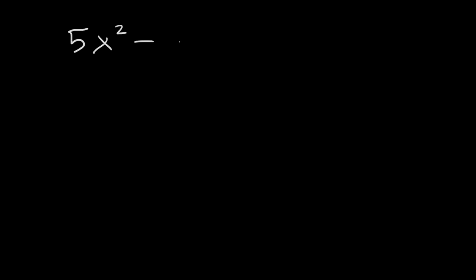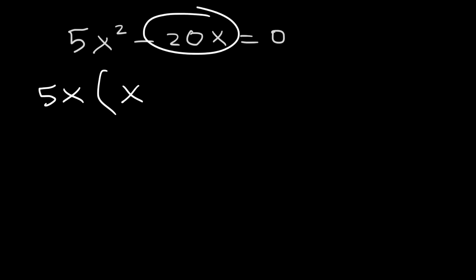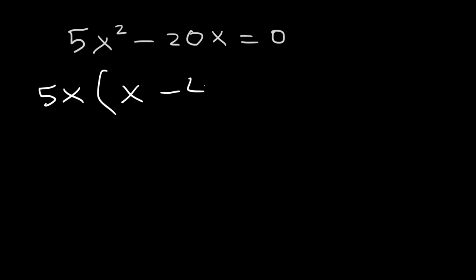For the sake of practice, try a similar example — feel free to pause the video as you work on it. Factor 5x squared minus 20x and calculate the value of x. So 5 goes into itself and 20, so the GCF is 5x. 5x squared divided by 5x is x, and negative 20x divided by 5x is negative 4.